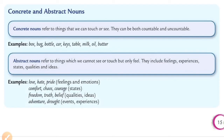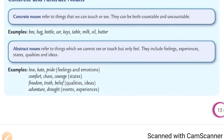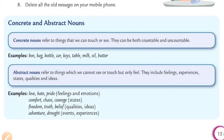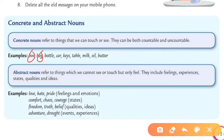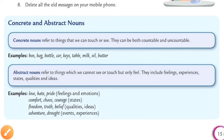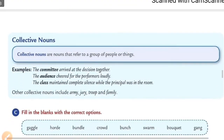Concrete nouns refer to things that we can touch or see — they can be counted or uncountable. For example, box, bag, and bottles are things we can easily touch, see, or count. Abstract nouns refer to things which we cannot see or touch but only feel — they include feelings, expressions, states, qualities, and ideas. For example, love, hate, and pride are abstract nouns — things we cannot see but can feel.